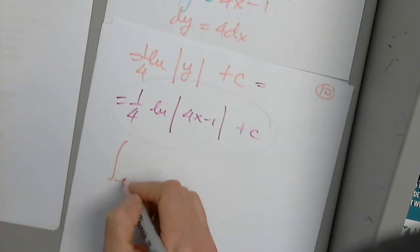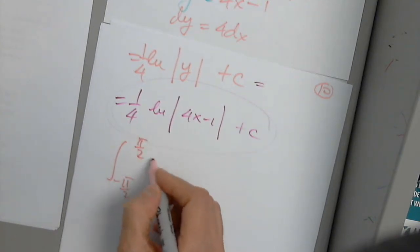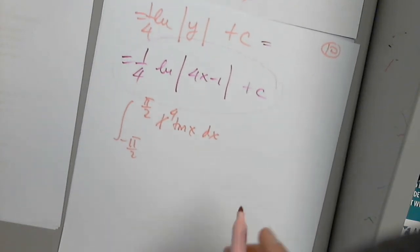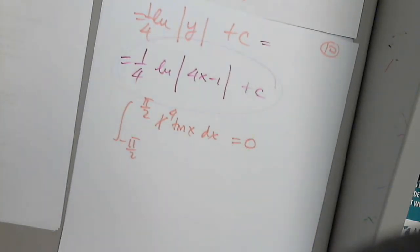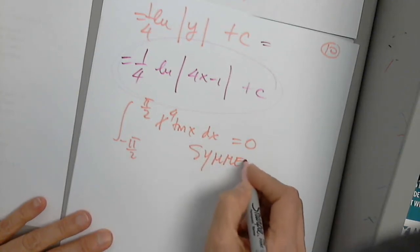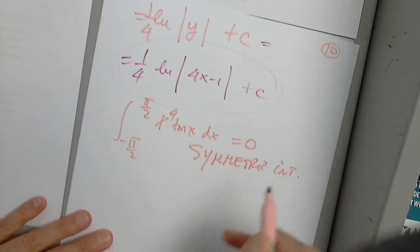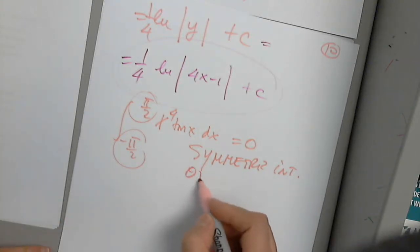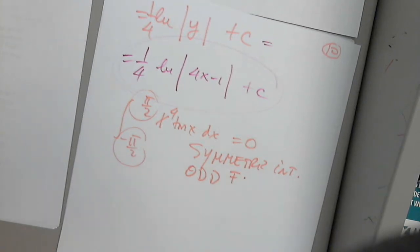Moving on: the integral from −π/2 to π/2 of x⁴ tan(x) dx. I note this is a symmetric interval. Every time I see a symmetric interval, I check whether the function is odd or even. The function is odd — odd function, symmetric interval.